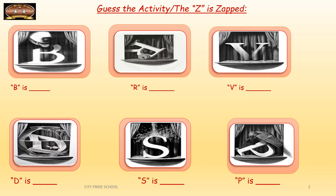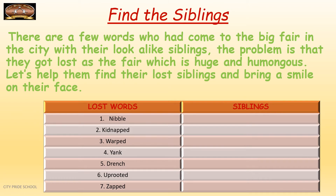Now we have another activity. Here we are with 'Find the Siblings.' Siblings — we all know what siblings are. There are a few words in a column called 'lost words.' They had come to a big fair in the city with their look-alike siblings, but the fair is huge and humongous and they all got lost. So we have the lost words and the siblings columns. Every word has at least two siblings. In the sibling column, you are going to find the word which looks alike or sounds alike to the words in the lost words column.